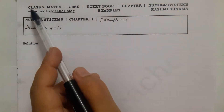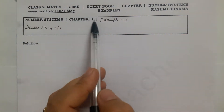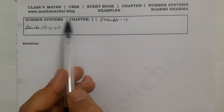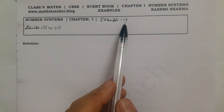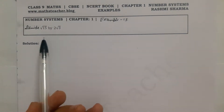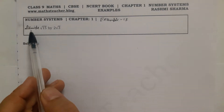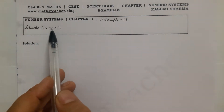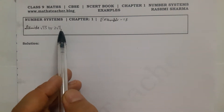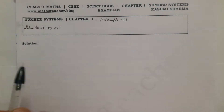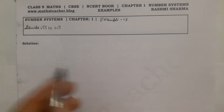In this video we are going to solve Class 9 Chapter 1 Number System, Example 15. It is a very easy objective type question: divide 8 root 15 by 2 root 3.